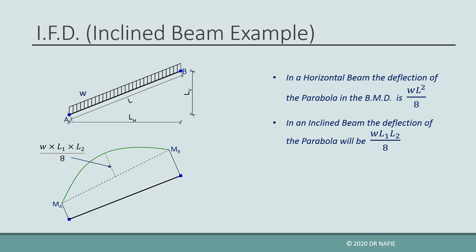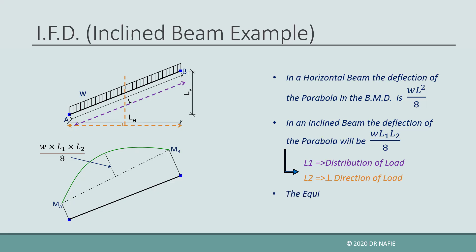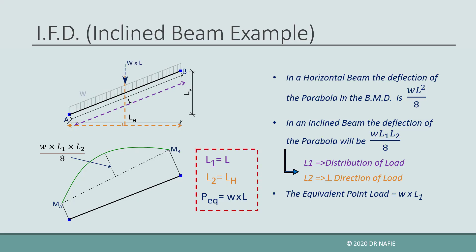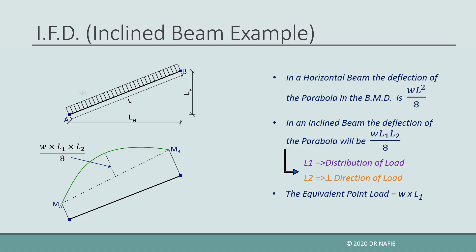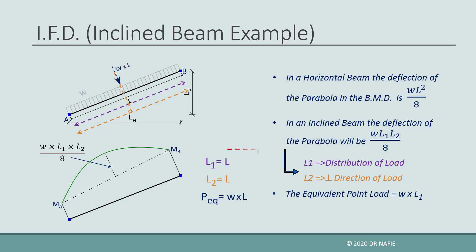But what is L1 and L2? L1 is the length on which the load is distributed, and L2 is the length perpendicular to the direction of the load. The equivalent point load of this uniform load will be equal to W multiplied by L1. For the shown load, L1 will be equal to L and L2 will be equal to LH, and the equivalent load will be equal to W multiplied by L. If the direction of the load is changed to be perpendicular to the beam, L2 will also be equal to L.